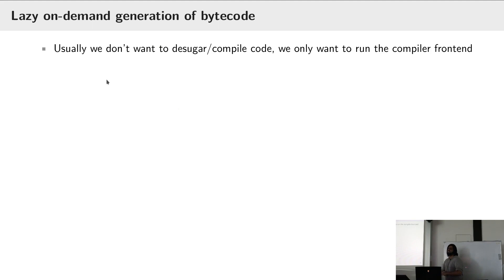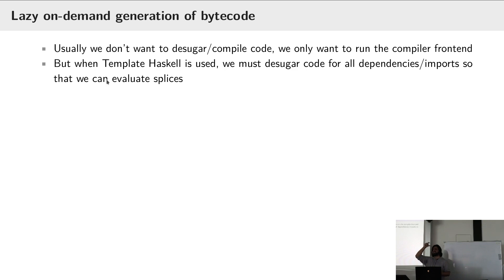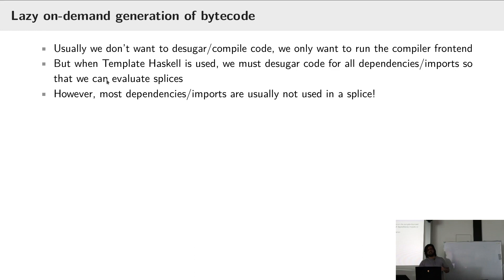Another feature is that we generate bytecode on demand and lazily. Usually when compiling, we don't want to de-sugar code or compile code unless we really have to, because all we really care about is the frontend. Sometimes you must de-sugar code in order to run the frontend, because the user is using template Haskell — you actually need to run code while doing frontend compilation. As soon as you write the language pragma TemplateHaskell in your file, it forces HLS to go and de-sugar all the modules you've imported.